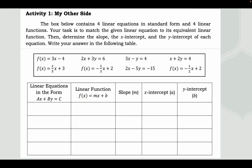For Activity 1, the box contains 4 linear equations in standard form and 4 linear functions. Your task is to match each linear equation to its equivalent linear function, then determine the slope, x-intercept, and y-intercept of each equation. Write your answers in the provided table, matching linear equations in the form ax + by = c to functions in the form f(x) = mx + b.